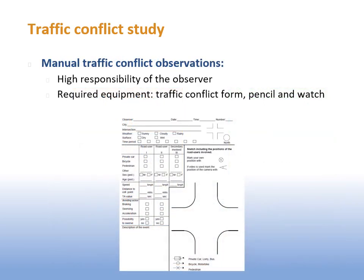During manual traffic conflict observations, a high responsibility is put on the observer, since it is the observer who has to detect conflicts, assess them and make notes all in real time. However, the advantage is the minimal required equipment — you only need a traffic form, a pencil and a watch. Here you can see one traffic form.